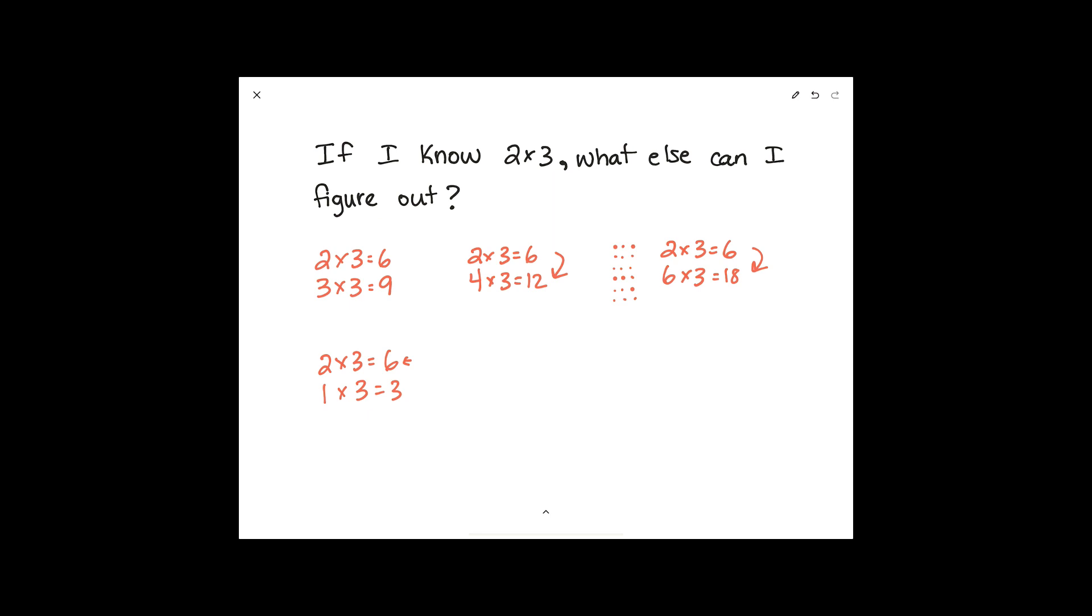What if I make ten times the number of groups? So I start with 2x3 and then I have ten times the number of groups and I have 20 groups of three. Well what's going to happen to my product? It's going to be ten times bigger as well. So now I have 60.